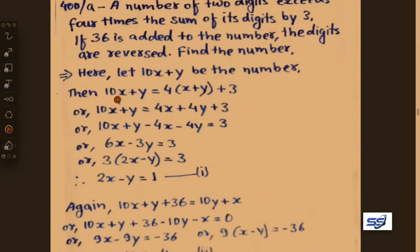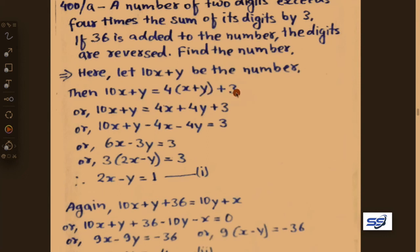From the first condition: 10x plus y equals 4 into x plus y plus 3. Expanding: 10x plus y equals 4x plus 4y plus 3. Rearranging: 6x minus 3y equals 3. Taking 3 as common: 2x minus y equals 1. Let this be equation 1.